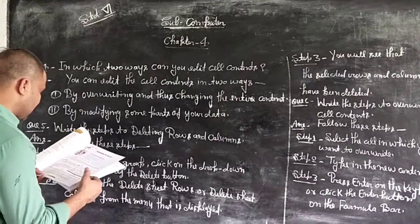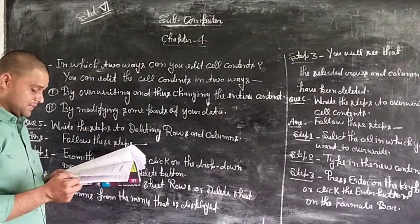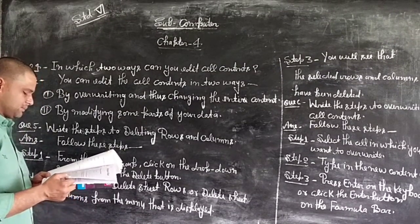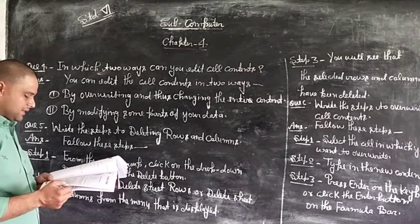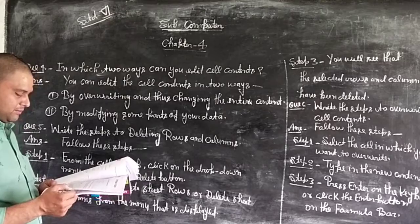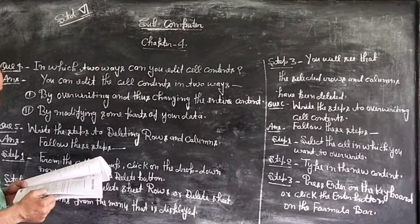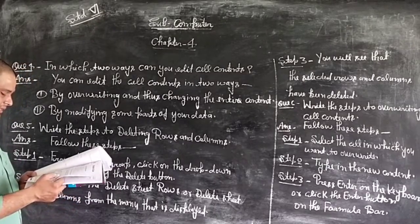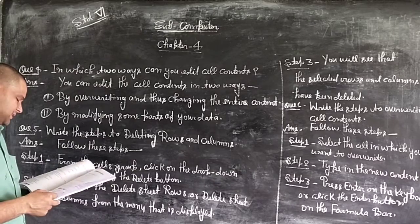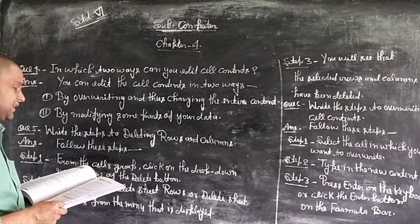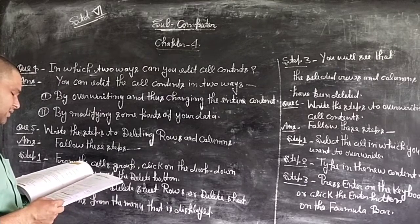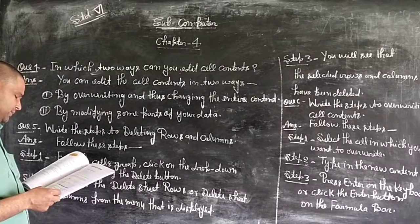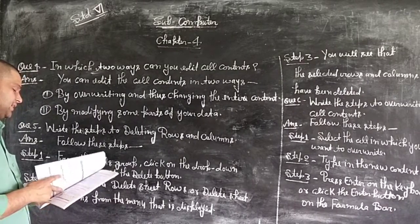Pointing: Instead of typing cell addresses, click directly on the cell. This is an easier method of writing a cell reference. The procedure is known as pointing. After typing equal sign, instead of typing B2, click on the cell B2. The marquee appears on B2 and the status bar shows the point status. Now enter the plus sign, then click on the cell B3, then type and click on cell B4 and cell B5. Finally, cell B2 will have the formula. Press the enter key to see the value.